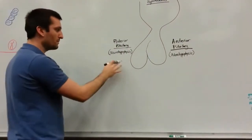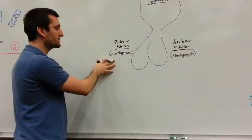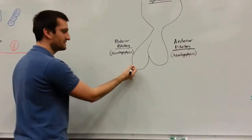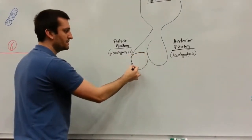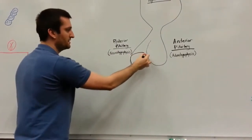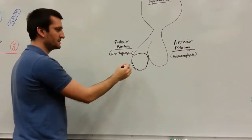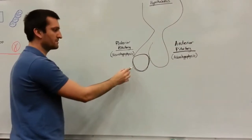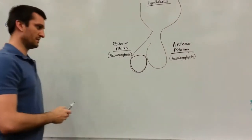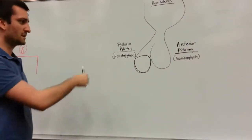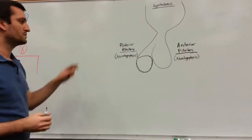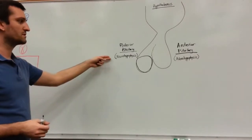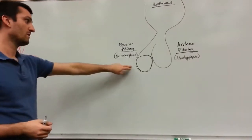The posterior pituitary, or the neurohypophysis — the area on the distal end is going to be called the pars nervosa. That's going to be where a lot of the posterior pituitary hormones are going to be stored.